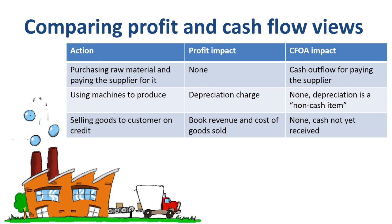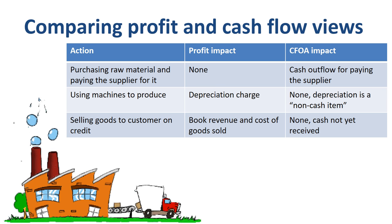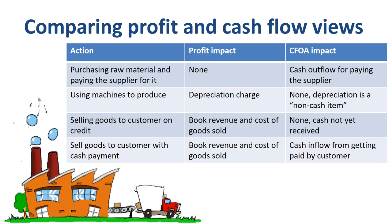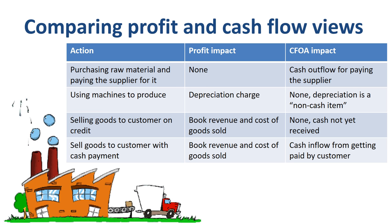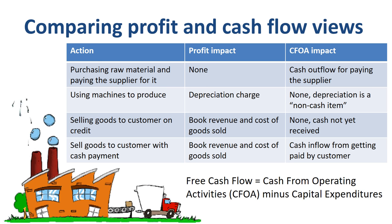If you sell goods to a customer on credit, you book the revenue and cost of goods sold when goods are delivered and revenue recognition criteria are met. For cash flow, this transaction does nothing, as no cash is coming into the company yet — until the customer actually pays you. If you sell goods with a cash payment, both profit and CFOA are impacted. It's only a small step from CFOA to free cash flow: deduct the cash that needs to stay in the company to fund new investments or replacements of existing machines, which is called CAPEX, or capital expenditures.